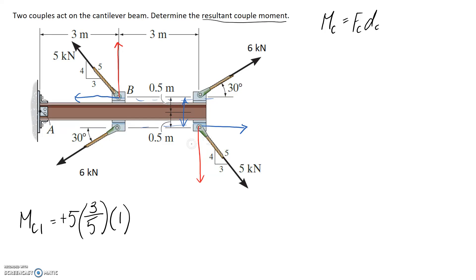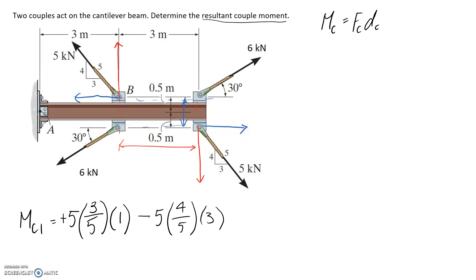Now considering the vertical parts: the size is 5 times the ratio of the vertical side to the hypotenuse, which is 4/5. We then multiply by the separation distance between the two vertical forces, which corresponds to the 3 meters on the diagram. Thinking about direction, placing your hands on a steering wheel at these positions, the forces rotate clockwise, which we take as negative. Putting it all into a calculator gives a total of negative 9 kilonewton meters.